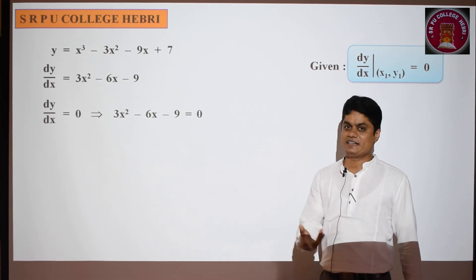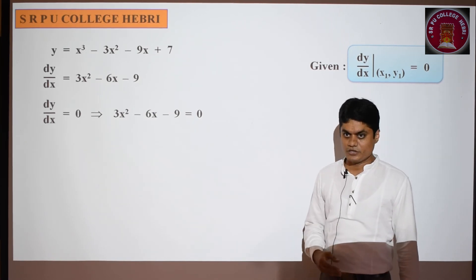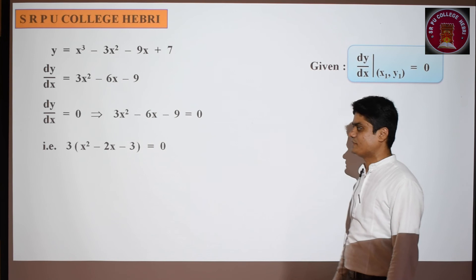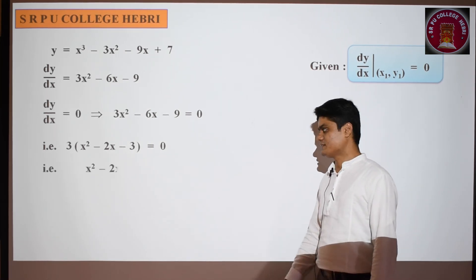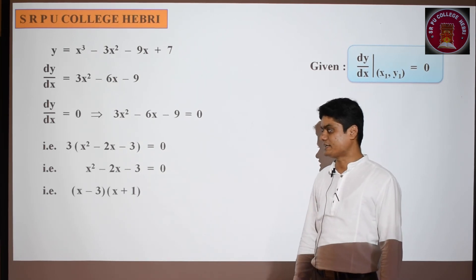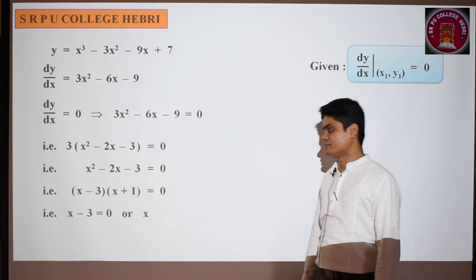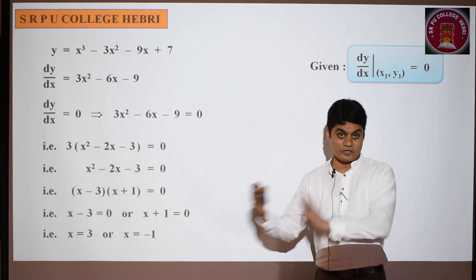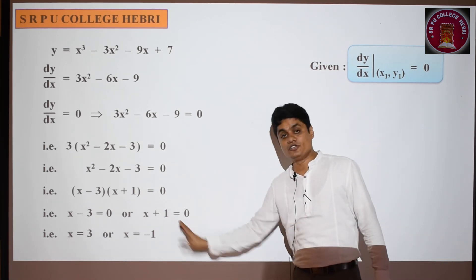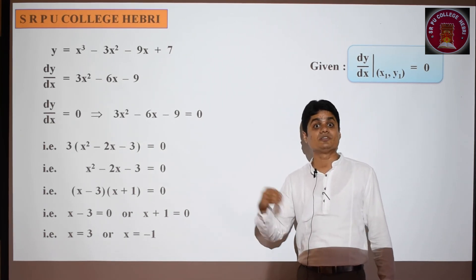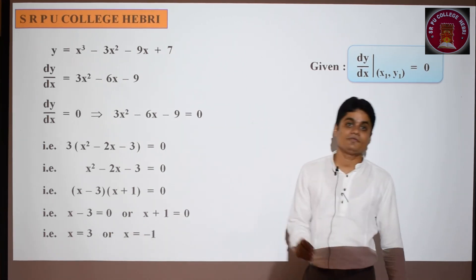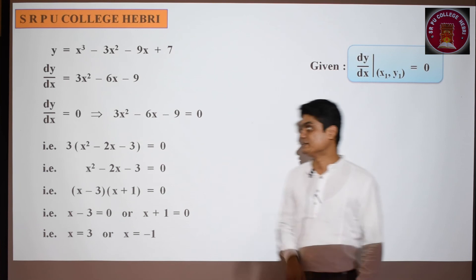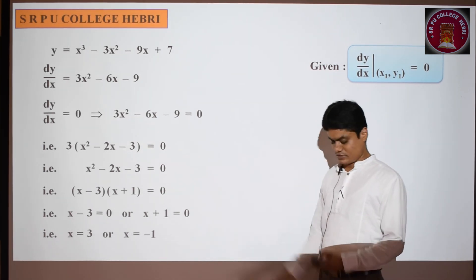Solve the quadratic equation. Taking 3 outside: x² - 2x - 3 = 0. Factorizing: (x - 3)(x + 1) = 0. So x = 3 or x = -1. Since the question asks for the point, we need both x and y coordinates, so we must find y for each value of x using the equation of the curve.